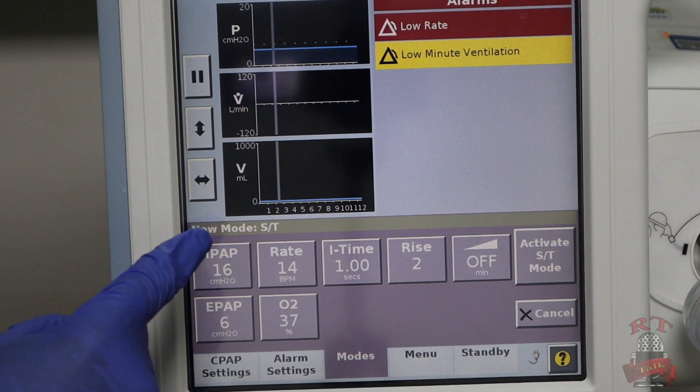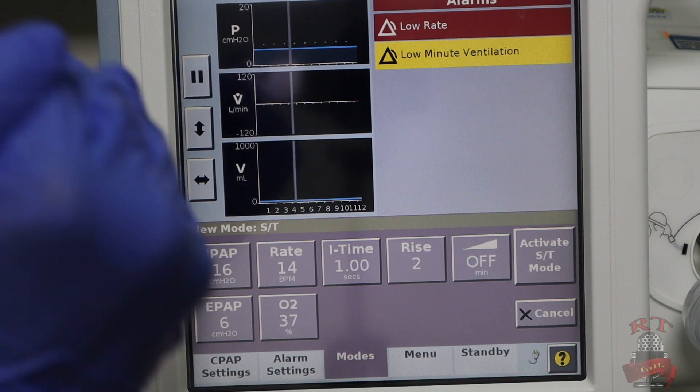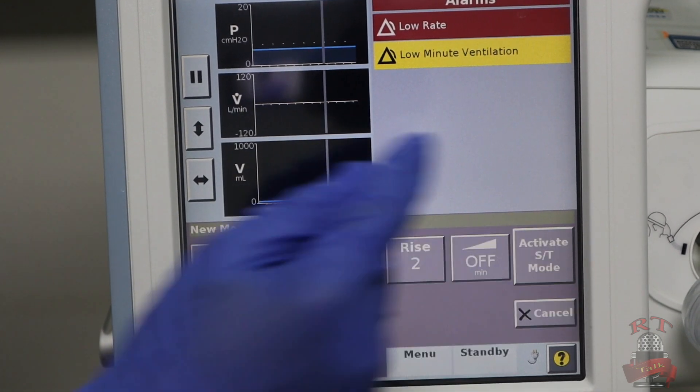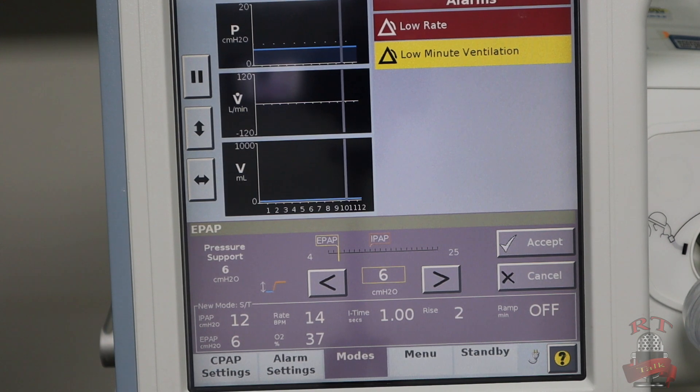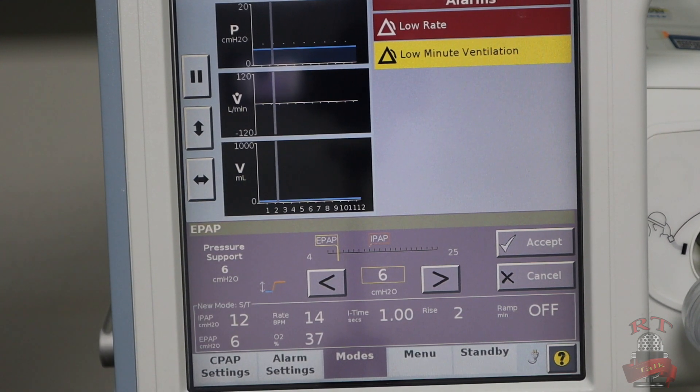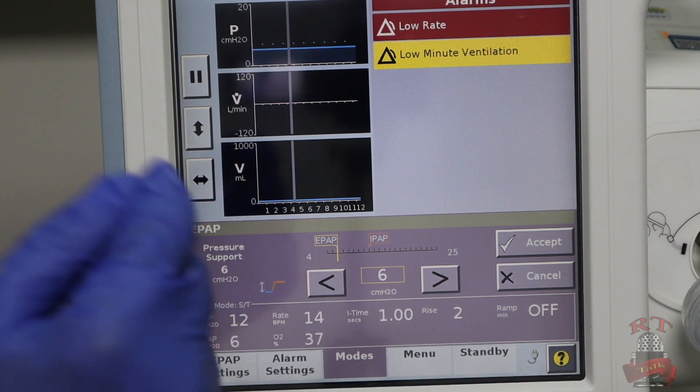First, your IPAP, which is inspiratory positive airway pressure—I will start it with 12. Your EPAP, which is expiratory positive airway pressure, is mainly for oxygenation. So I will keep it at 6.